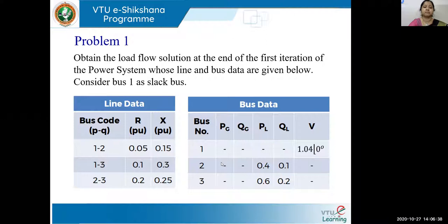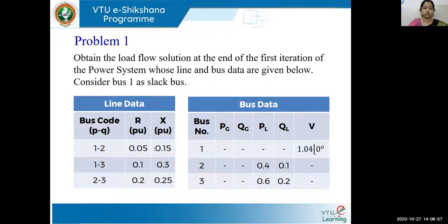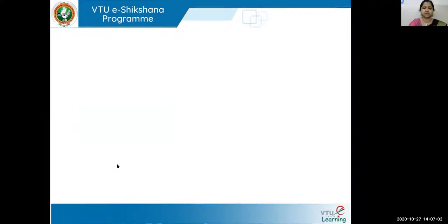The bus data tells us what type each bus is. Bus number one has voltage and angle given, so it is a slack bus. The next two buses have load values given, so they are load buses. The first step is to draw the network for this line data and then form the Y-bus.